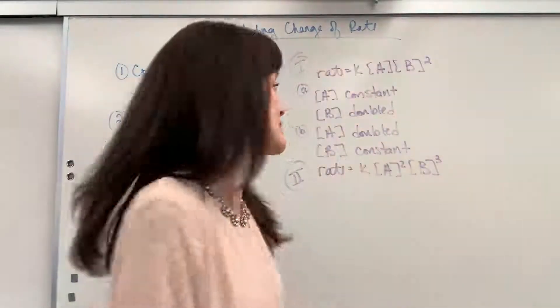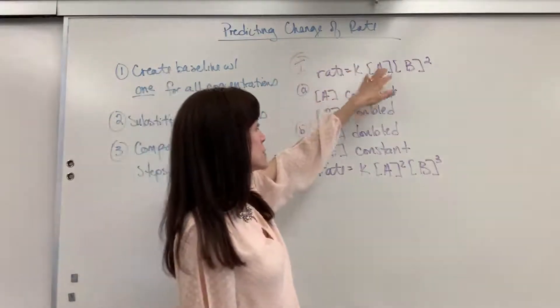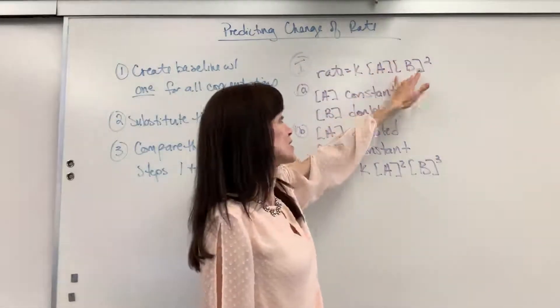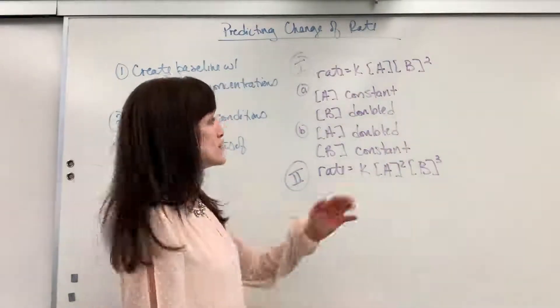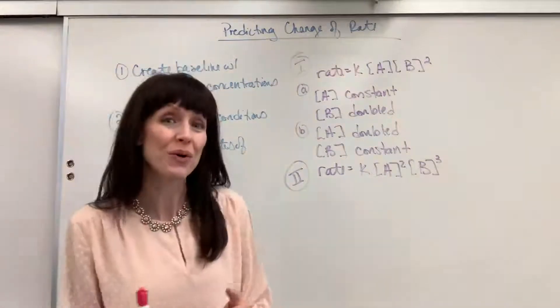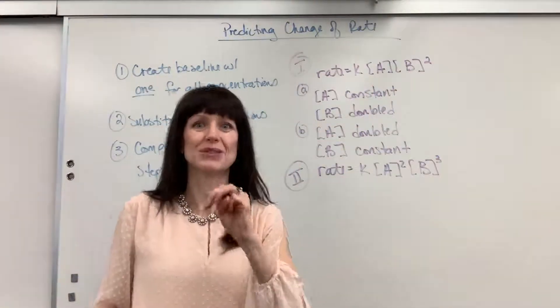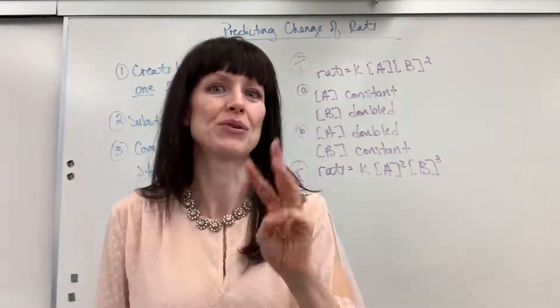So I have several examples here. We're going to have first this rate law. Rate equals K times the concentration of A to the first order, times the concentration of B to the second order. So let me ask you a quick question. What's the overall order for that rate law? 1 plus 2, third order, using the ordinal term, third order. Nice.